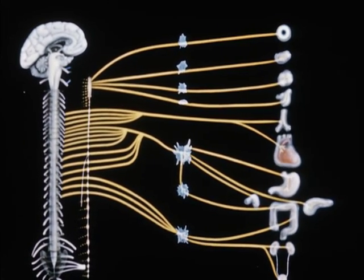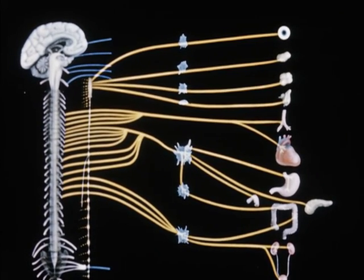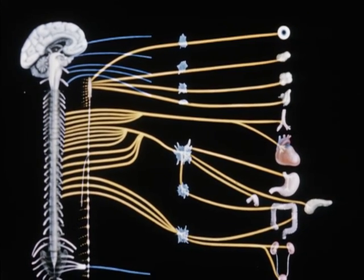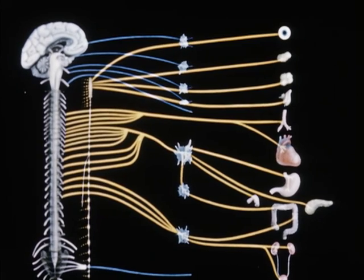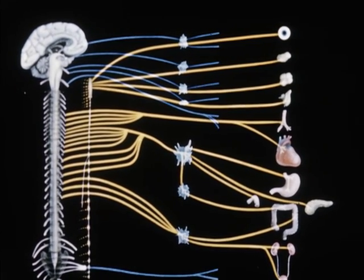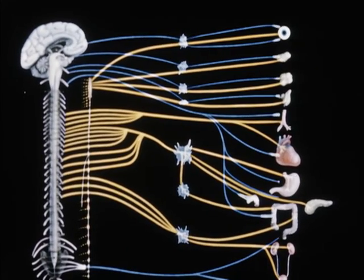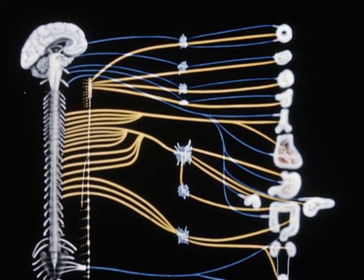The preganglionic fibers of the parasympathetic subdivision arise variously from the hypothalamus, the midbrain, the medulla, or from sacral segments of the spinal cord. These fibers travel to well-defined ganglia for structures of the head and neck, but the ganglion cells associated with thoracic, abdominal, and pelvic viscera are within the viscera themselves.